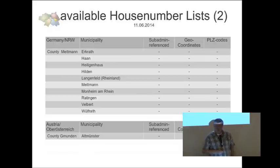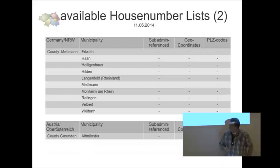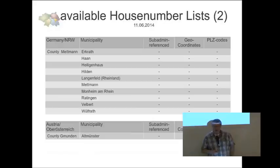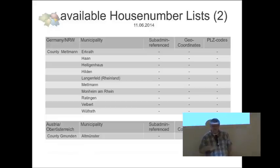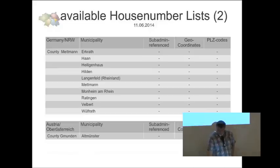These are the rest of the house number lists we have. We have 26 in Germany and one in Austria. The last 10 in the county Mettmann is the case where the OSM user asked the complete county Mettmann, which consists of 10 municipalities. They completely gave us house number lists for the entire county - this is a very good case that we have a bigger area to map the house numbers.